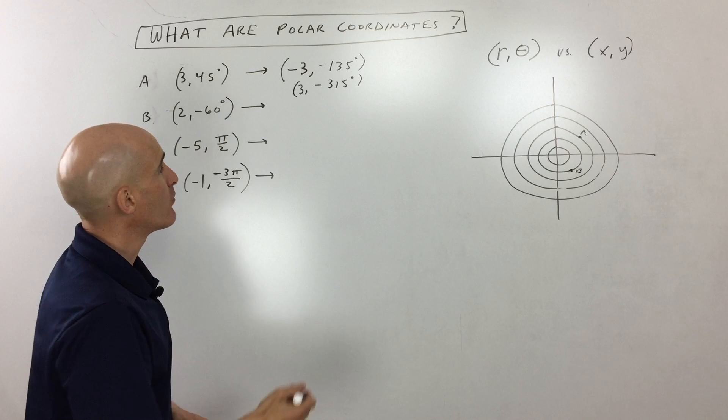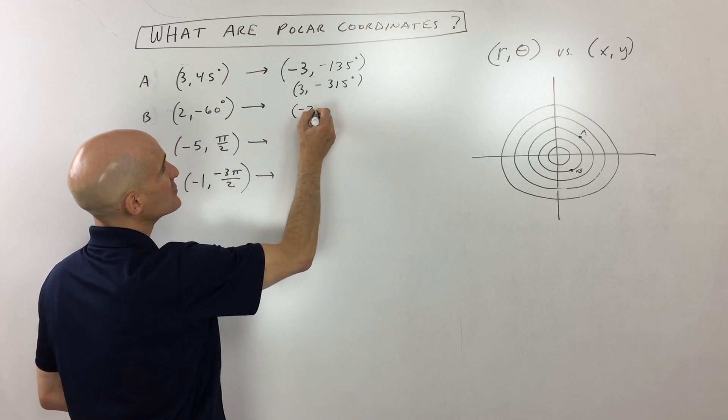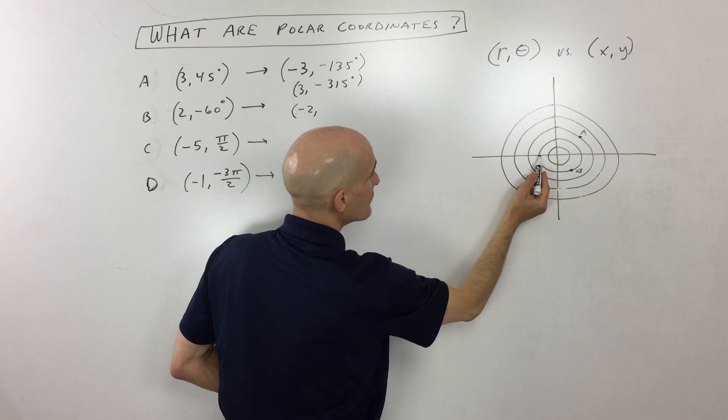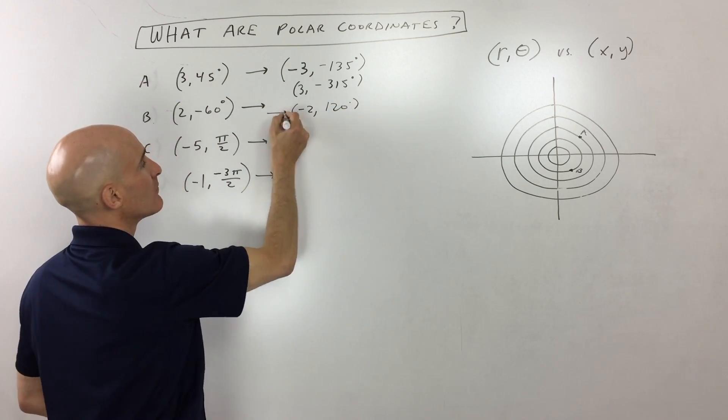Now, what's another way of locating that same point? Well, let's see. How about if we go negative 2 this time? So that would be negative 2. I'm going to the left. And then we're going to go 120 degrees. You would end up in the exact same point.